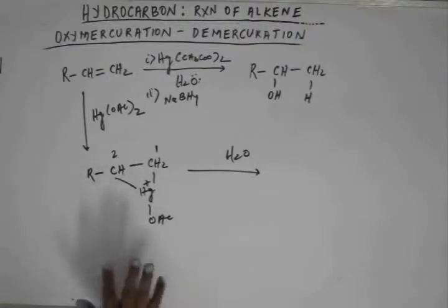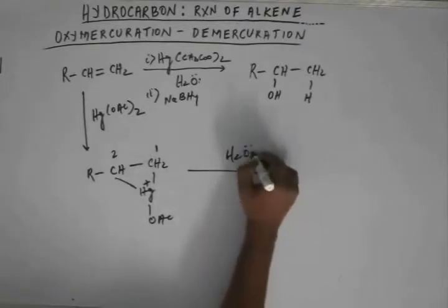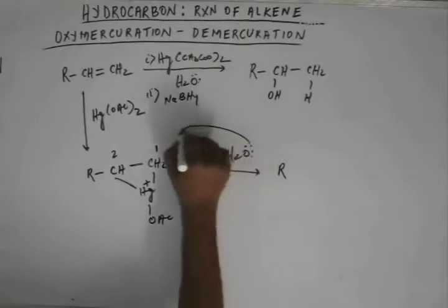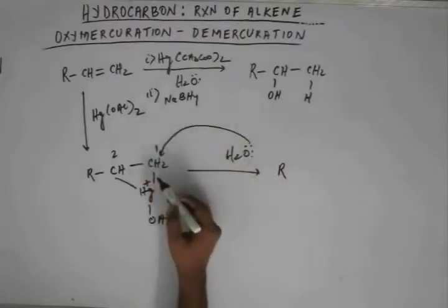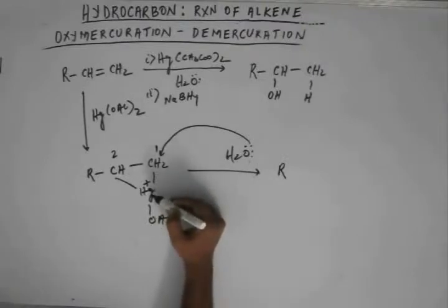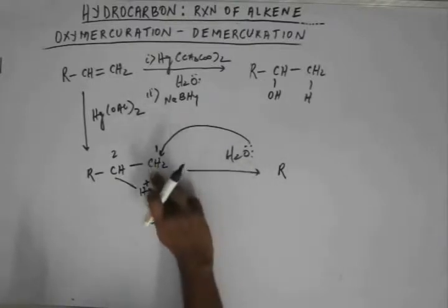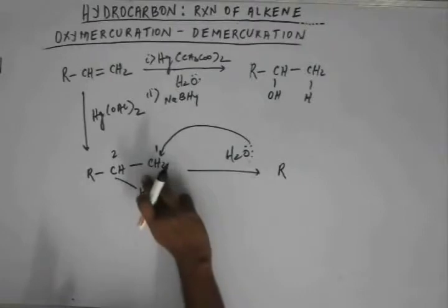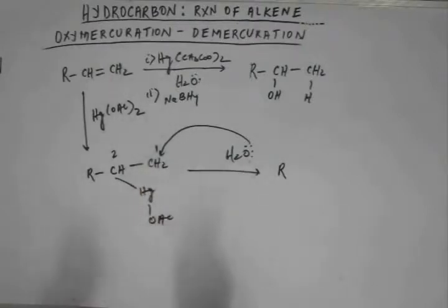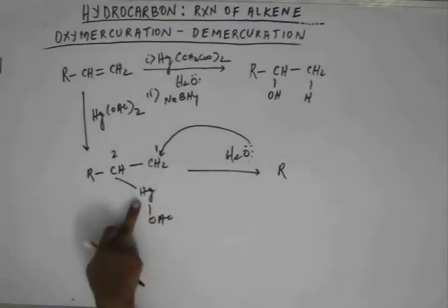There is no formation of carbocation here. Suppose water attacks on C1 — the lone pair of water gets into the orbital of this carbon. This carbon has to break a bond. Carbon will break this bond because on breaking this bond, the electron goes to mercury and mercury gets neutralized. So if carbon is gaining the electron of this oxygen, it will break this bond. And when this bond gets broken, the plus charge of mercury vanishes because the electron of that bond comes to the orbital of mercury.